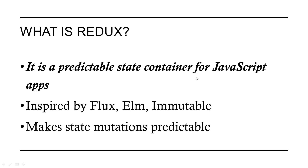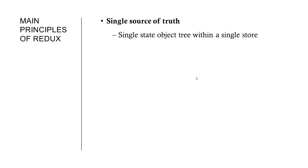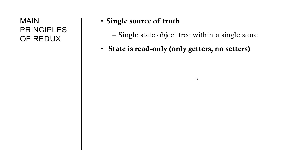Now let's see the main principles of Redux. The first is single source of truth — a single state object within a single store. From that store every component will take its data, so we don't have to pass props. This means there is no complex structure where one state depends on another state.